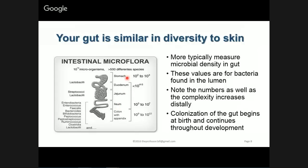In your stomach, unless you are very ill or immunocompromised, we don't have a lot of bacteria — about 10² to 10³. The numbers are not important; please don't memorize them. What I want you to realize is that as we go from the stomach through parts of the small intestine — duodenum, jejunum, and ileum — we start to increase the numbers of bacteria. By the time we get into the large intestine and the colon, as well as the appendix, we have many, many more bacteria than we did up in the stomach.